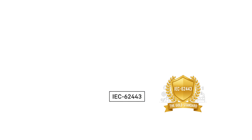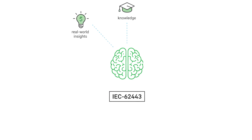In this video, we're going to explore what IEC 62443 is, why it's the gold standard for industrial cybersecurity, and how it can prevent disasters like the one at Colonial Pipeline. Stick around, because by the end, you'll not only understand IEC 62443 but also walk away with real-world insights and interview-ready knowledge. Let's dive in.